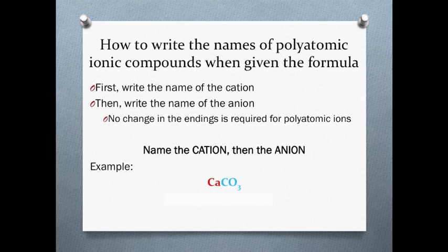So if you know the formula, how do you write the name of an ionic compound that contains a polyatomic ion? Well, quite simply, the same way you name any ionic compound. First, write the name of the cation, then write the name of the anion. Since polyatomic ions already have their endings changed, there's no need to change the ending to '-ide', as you do with single atom ions. In our example here, we just name the cation, calcium, then name the anion, carbonate.